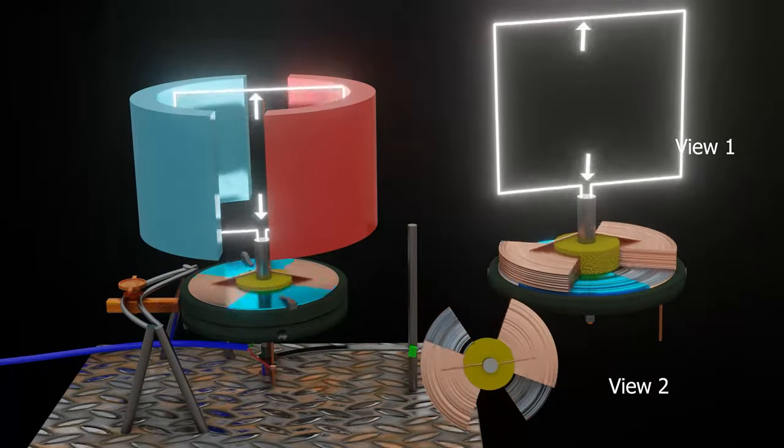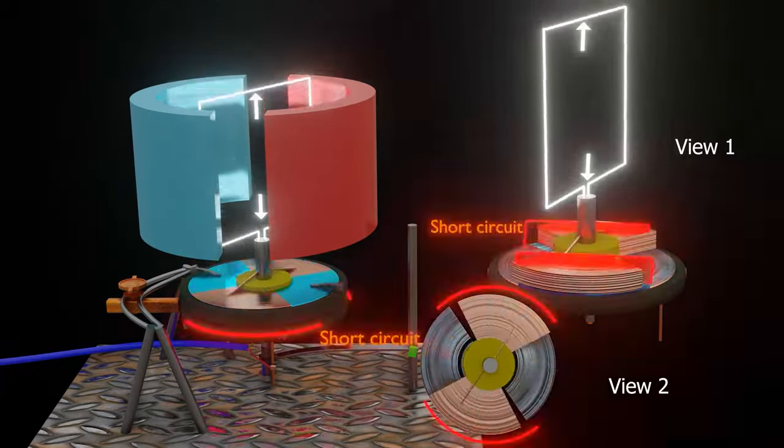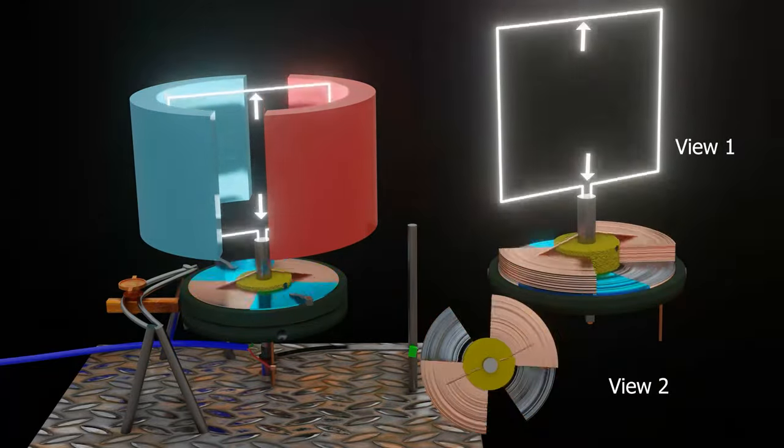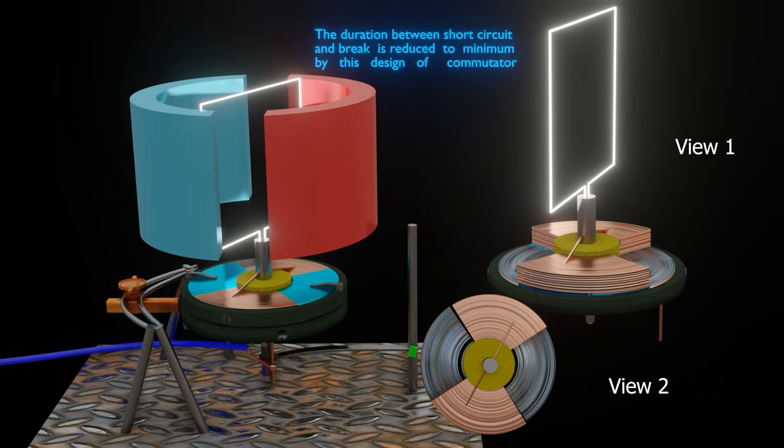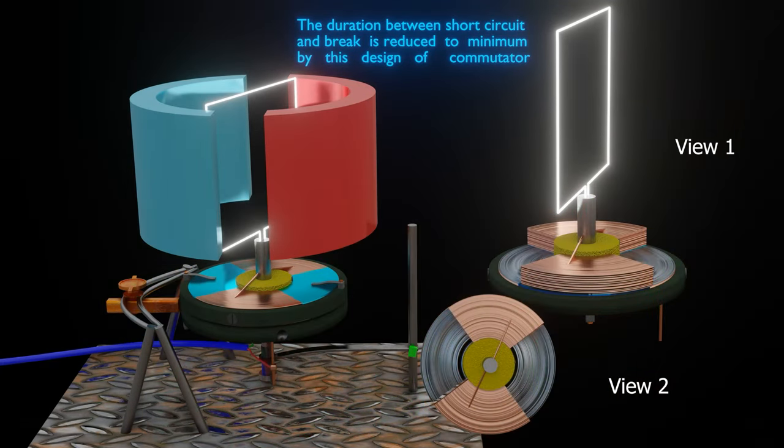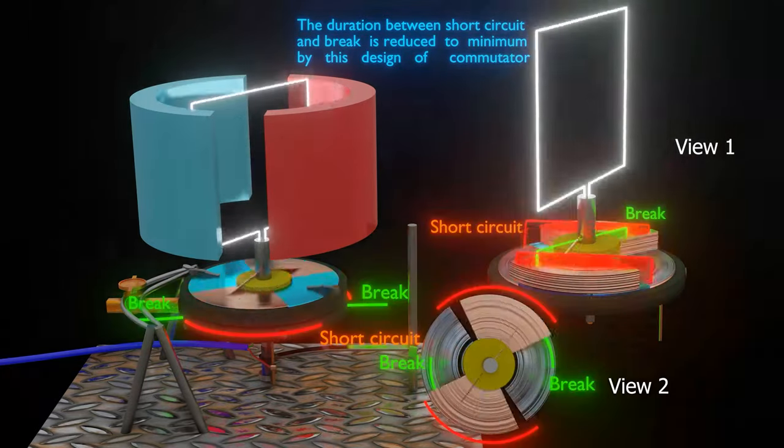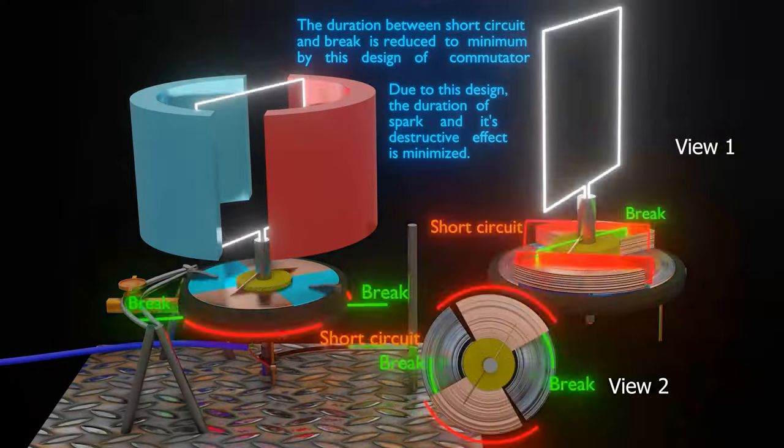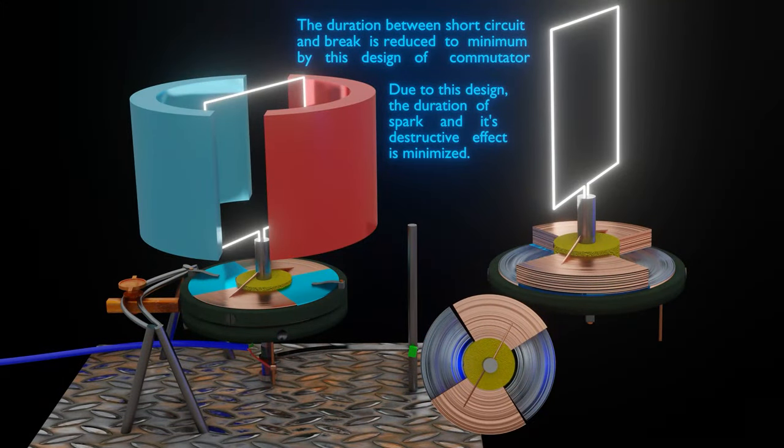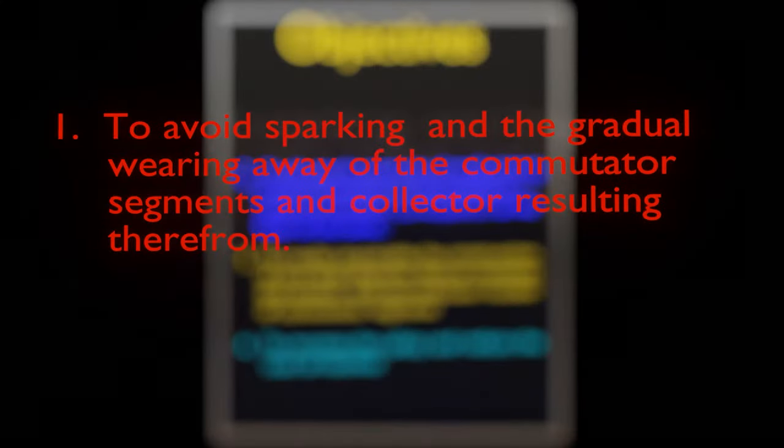We can also see that the duration of both the short-circuit and the brake are reduced to minimum. This results in diminishing the destructive effect of the spark. Since this would be in a measure proportion to the duration of the sparks. So Tesla's first objective was fulfilled.